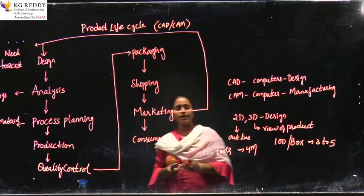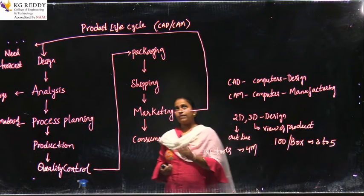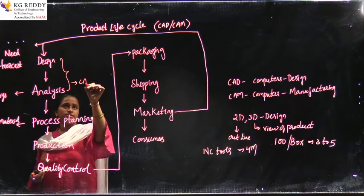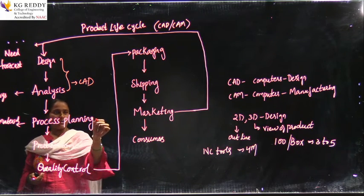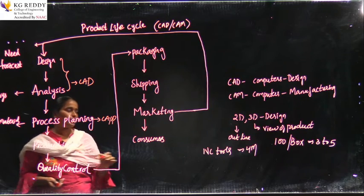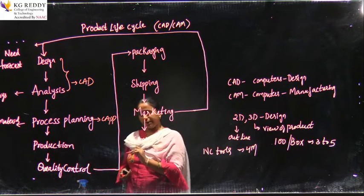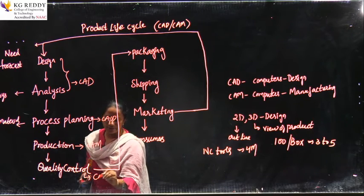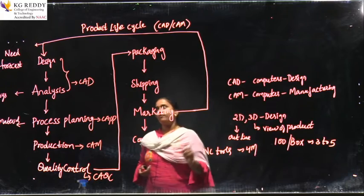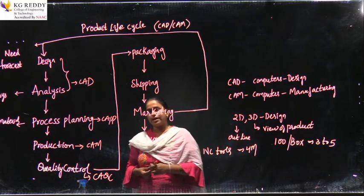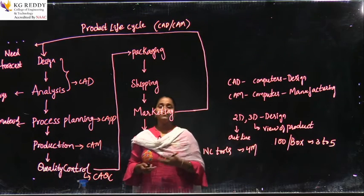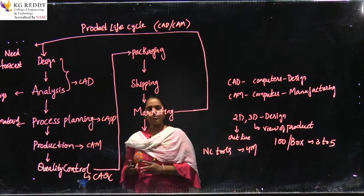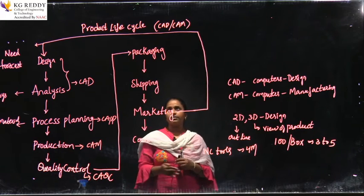In this product life cycle, computers are applied at various stages: the design stage is called CAD, process planning done with computers is called CAPP (Computer Aided Process Planning), manufacturing or production is CAM, and quality control can also be checked using computer-aided quality control. Wherever we apply computers — in design, process planning, manufacturing, and quality control — we get efficient products in the market with no defect. That is why CAD and CAM are very important, and the product life cycle is a cyclic process.